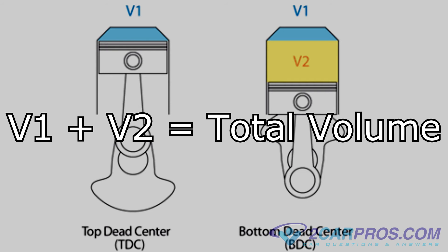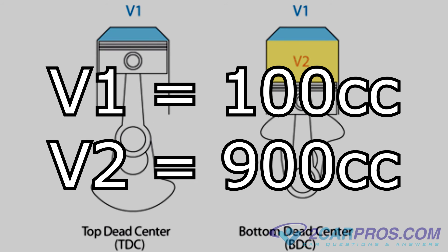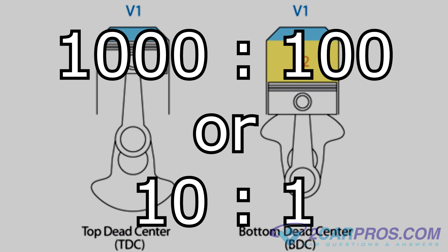For example, a cylinder and its combustion chamber with the piston at the bottom of its stroke may contain 1,000 cc of air — 900 in the cylinder and 100 in the combustion chamber. When the piston has moved up to the top of its stroke inside the cylinder and the remaining volume inside the head or combustion chamber has been reduced to 100 cc, then the compression ratio will be described as 1,000 to 100, or reduced down to 10 to 1.